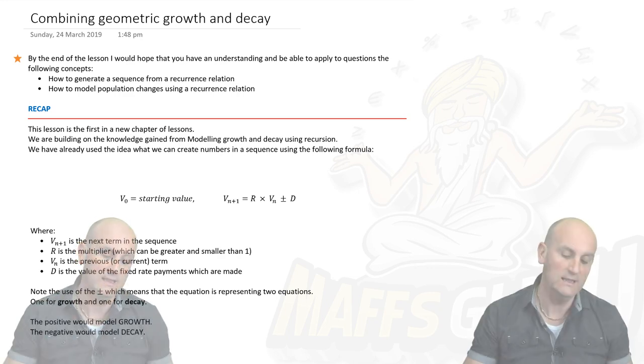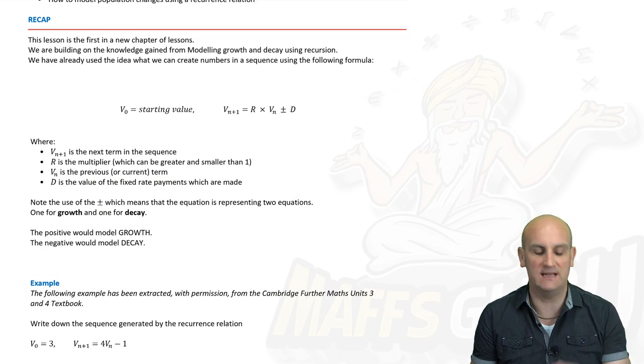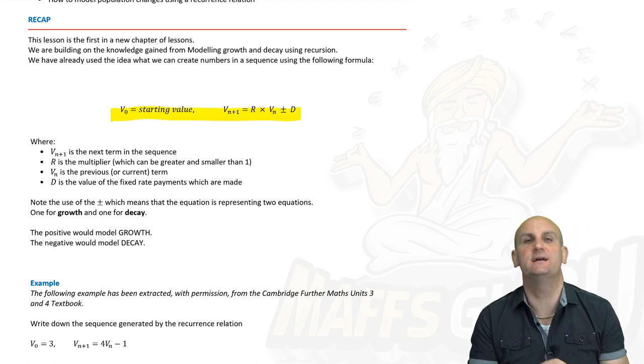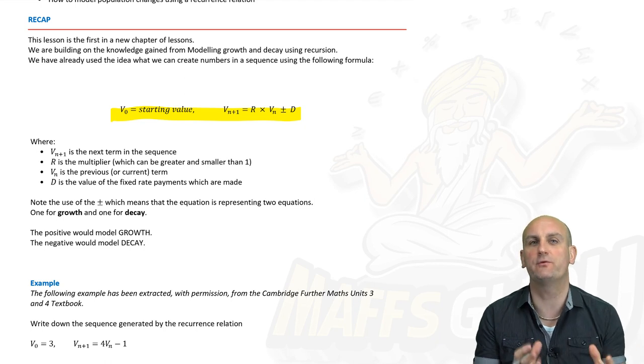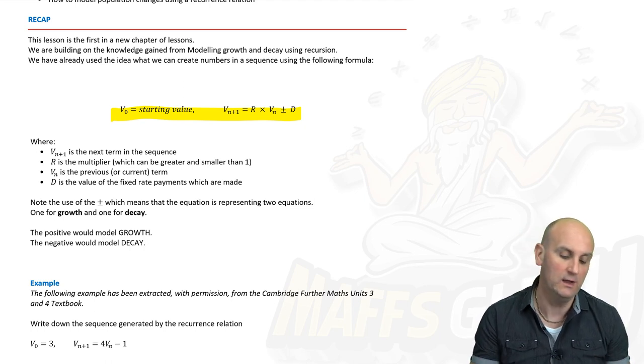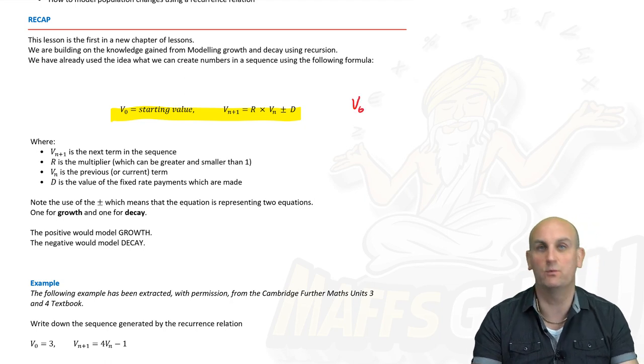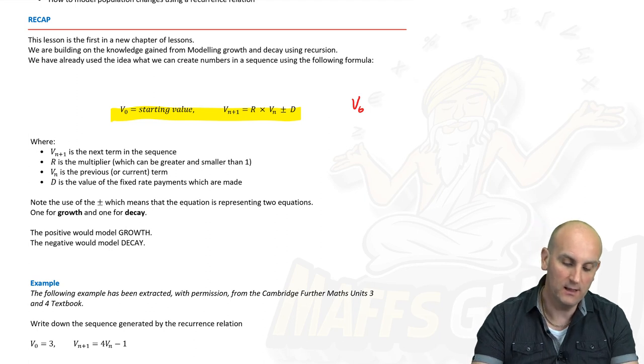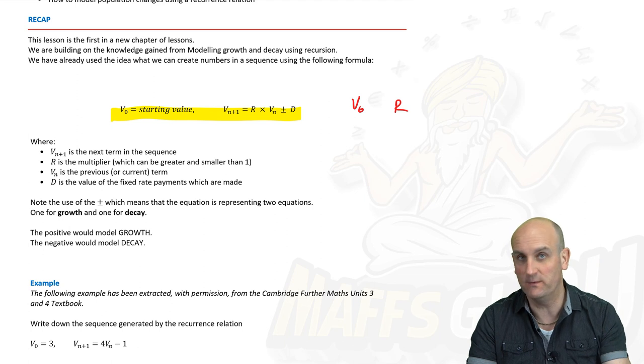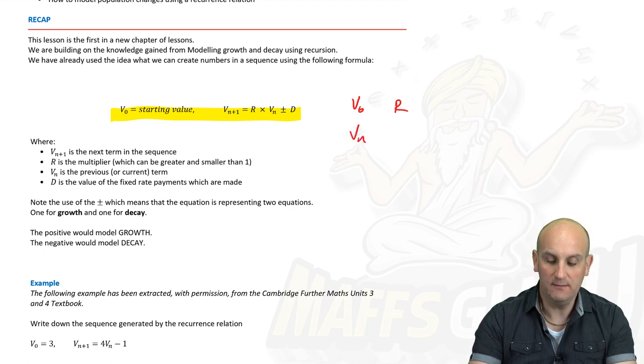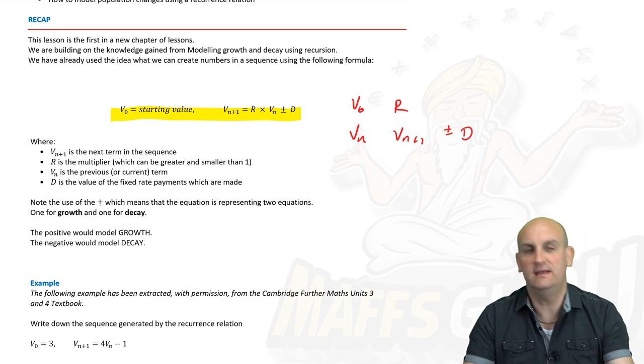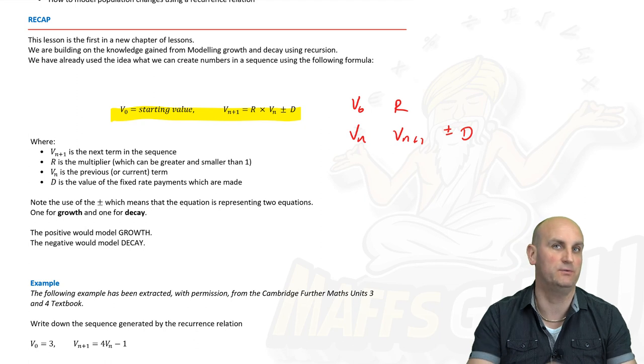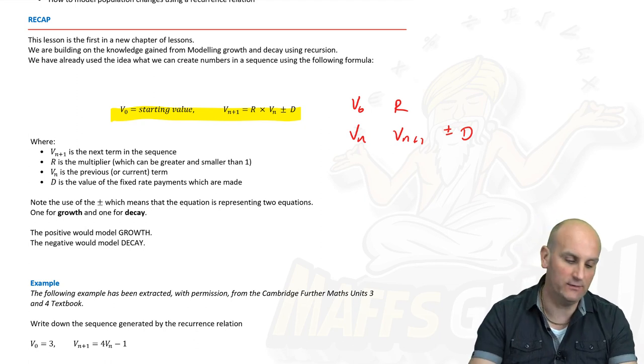All right, so combining geometric growth and decay. If you remember back to the previous chapter, we came up with formulas that had V_0 as our starting value and we could, if we knew a rule, create each successive term by taking the previous term, multiplying it by some sort of percentage multiplier, and in the more complicated questions, adding or taking away a regular payment. So basically this formula, V_0 is our starting value, that's what we opened our investment account with or what loan we took out. R is our percentage multiplier as a decimal. V_n means take my current term.